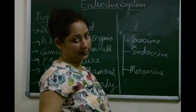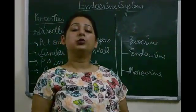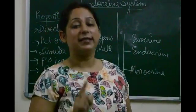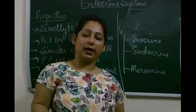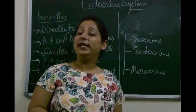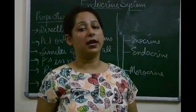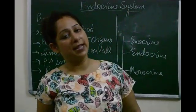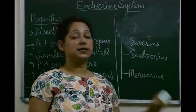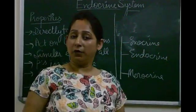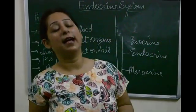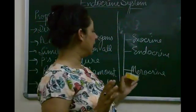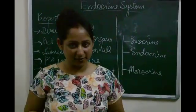The last type of glands are the merocrine glands, also known as exo-endocrine glands, because they function as both exocrine and endocrine in nature. The only gland in our body which acts as merocrine is the pancreas — sorry, not the liver — the merocrine gland in our body is the pancreas.